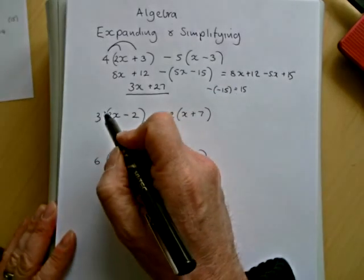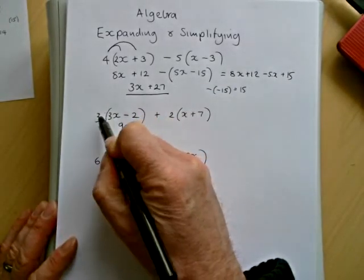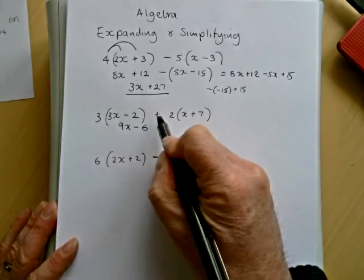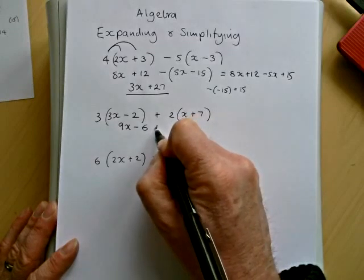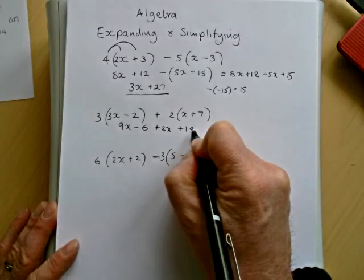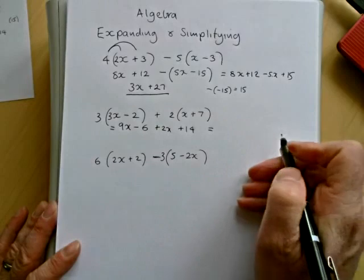Now do another one. So now we're going to do 3(3x-2) + 2(x+7). 3 times 3x is 9x, minus 3 times 2 is minus 6, plus 2 times x is 2x, and plus 2 times 7 is plus 14. I'll write my equal sign there and use the space here.